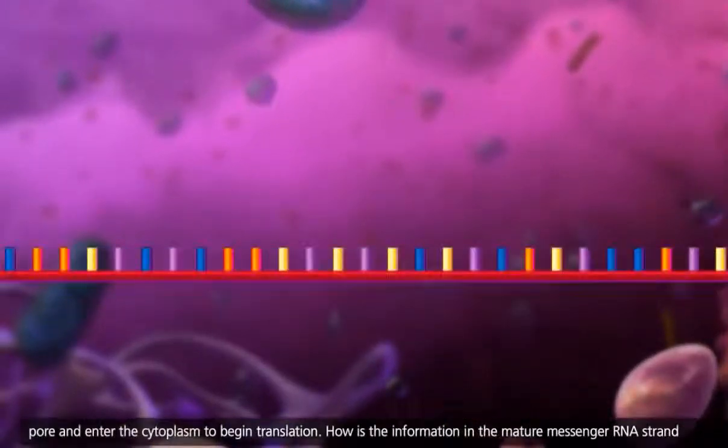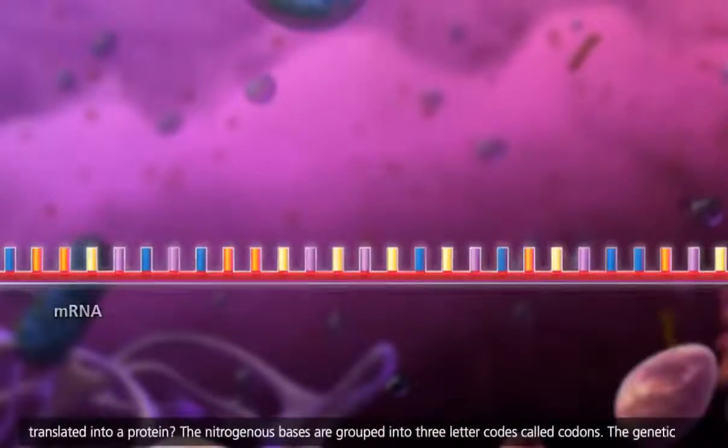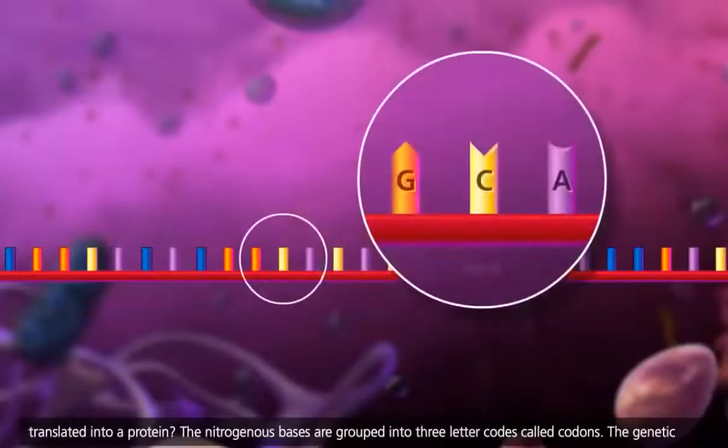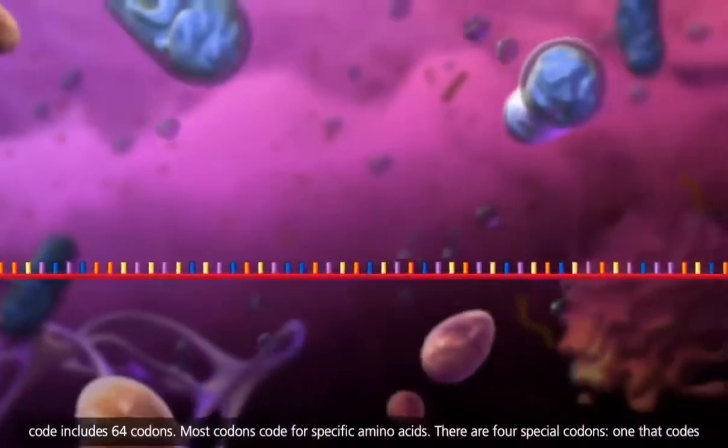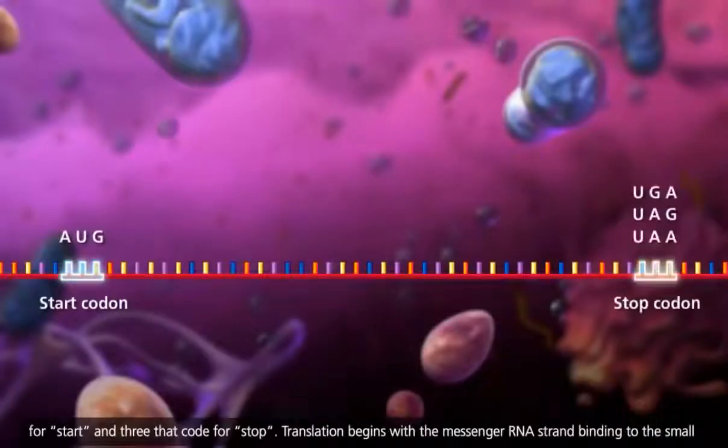How is the information in the mature messenger RNA strand translated into a protein? The nitrogenous bases are grouped into three-letter codes called codons. The genetic code includes 64 codons. Most codons code for specific amino acids. There are four special codons, one that codes for start and three that code for stop.